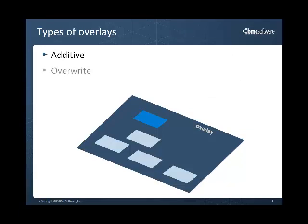The overwrite type enables you to copy and then modify the origin definition. The copied information with any changes is preserved if the origin object's definition changes. If an origin object is modified during a patch or upgrade, you should examine and reconcile overlays with the overwrite type.